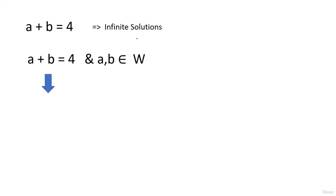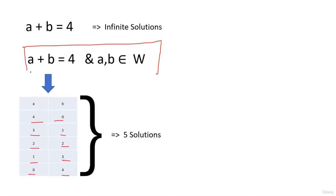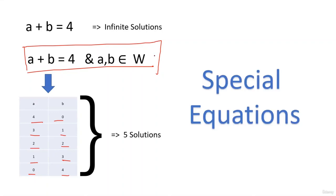Here you will observe that a and b can take these values. We have five such solutions. These particular equations are called special equations. They are linear equations having two variables but they have a certain constraint that limits the number of solutions that they have. Otherwise a plus b equal to 4 has infinite solutions, but given the condition that a and b belong to whole numbers, the number of solutions reduce considerably.